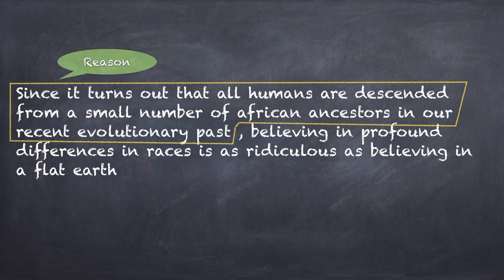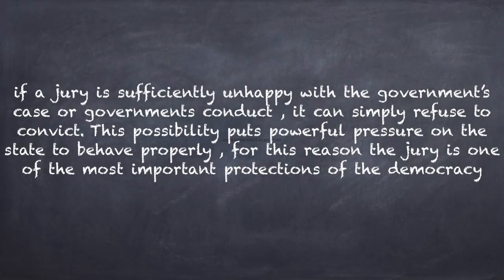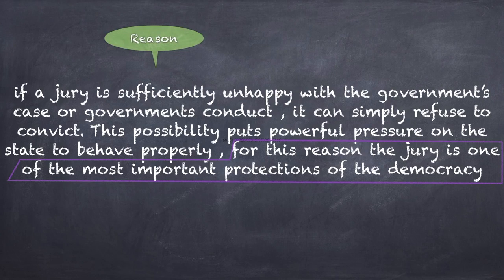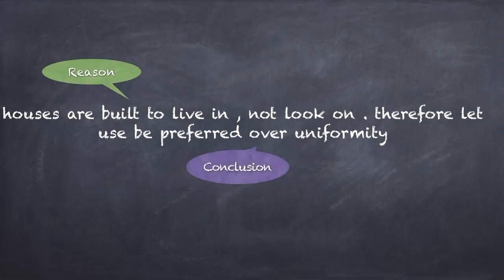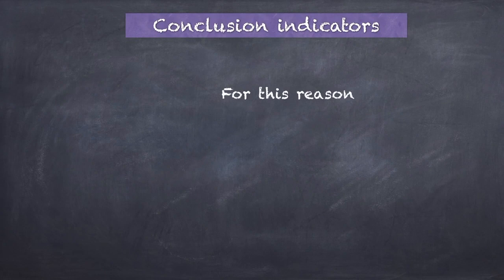Another example: 'Since it turns out that all humans are descended from a small number of African ancestors in our recent evolutionary past' — this is the reason — 'believing in profound differences in races is as ridiculous as believing in a flat earth' — this is the conclusion. Another: the first part of a paragraph is the reason, and 'the jury is one of the most important institutions of democracy' is the conclusion. 'Houses are built to live in, not to look on' is the reason, and 'let use be preferred over uniformity' is the conclusion.